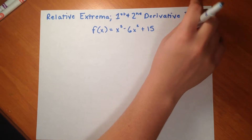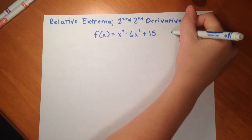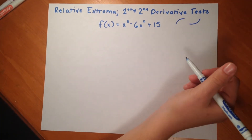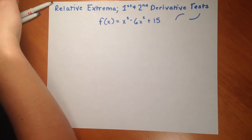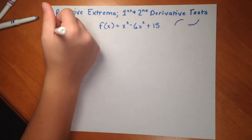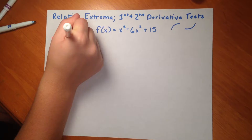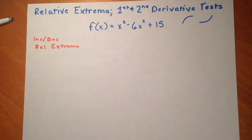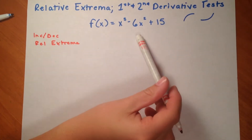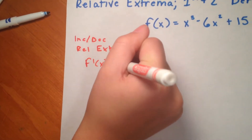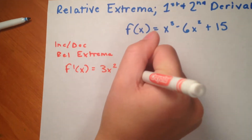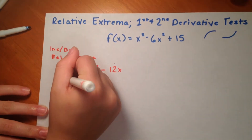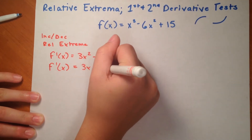and the concavity of the curve, so concave down or concave up. We're going to start out with the first derivative test, and this first derivative test will tell us increasing, decreasing, and the relative extremum. So the first derivative test gives us f prime x equals 3x squared minus 12x, and we're going to simplify that down to 3x times x minus 4.